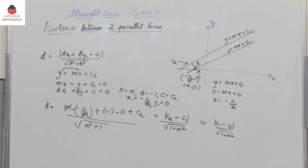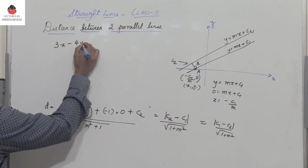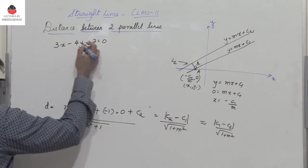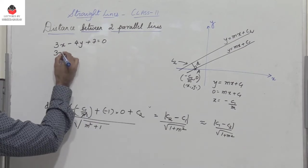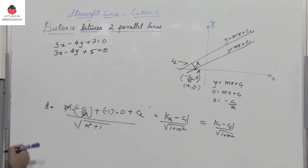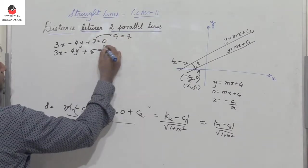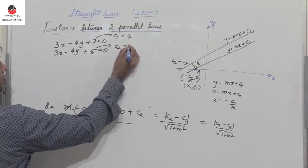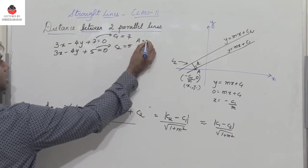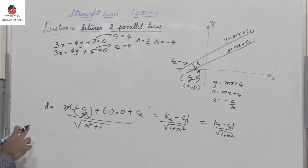Let's take an example. Find the distance between the two parallel lines 3x minus 4y plus 7 equals 0 and 3x minus 4y plus 5 equals 0. So observe this is c1 which is 7, and let this be c2 which is 5, and a is 3, and then b is minus 4. So substitute the value.